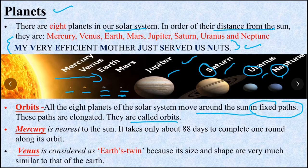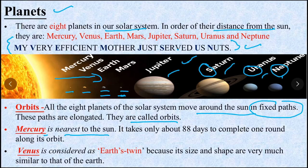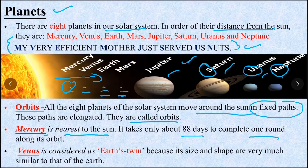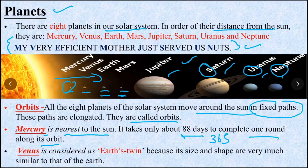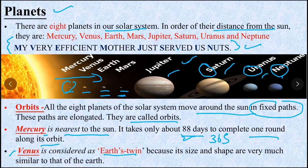There are some important points regarding individual planets. Like Mercury - it is the nearest to Sun. It takes only about 88 days to complete one round along its orbit.